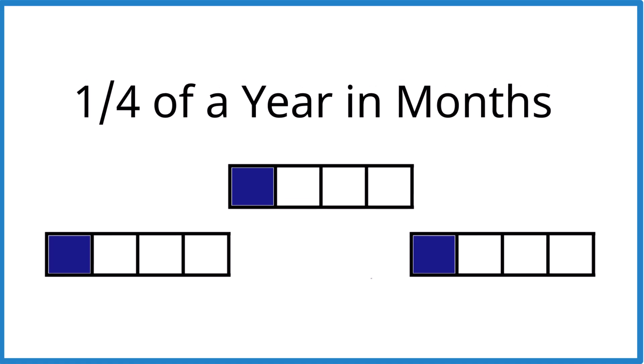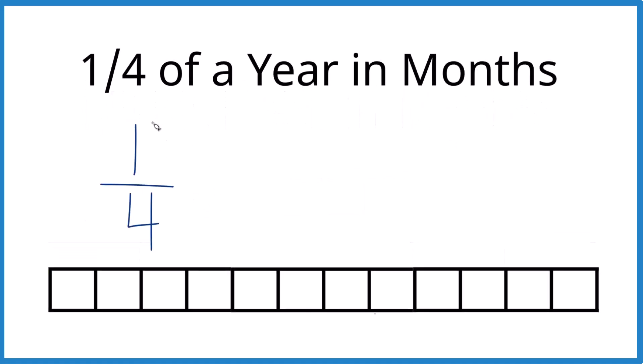Here's another way you could do it. You could say one part to four is the same as something to 12, which is our 12 months. So four goes into 12, three times four is 12. So we have three times four here, one times three here would give us three.